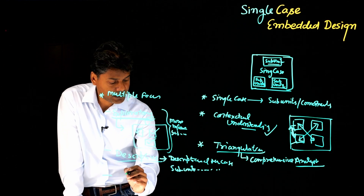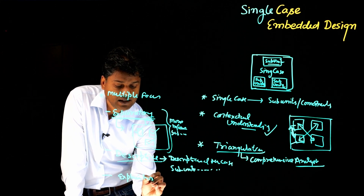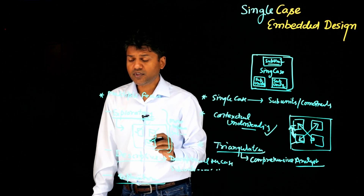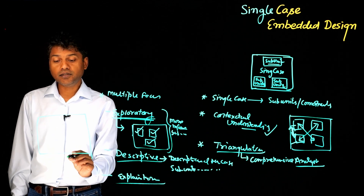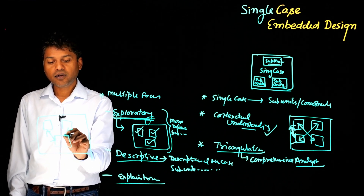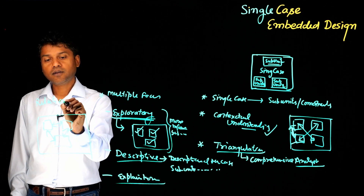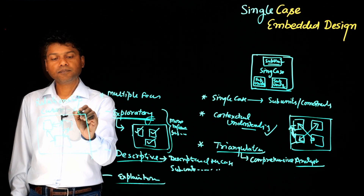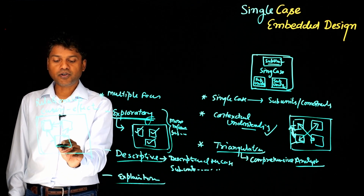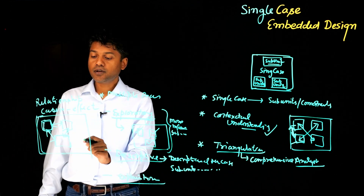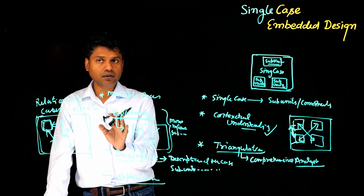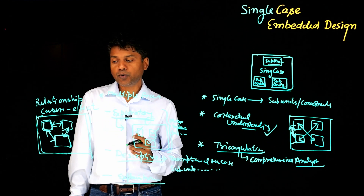And finally, you can make it more explanatory in nature. Explanatory focus means you are trying to understand — if this is a single case — how these various subunits relate to each other, what is the relationship between them, including cause-and-effect connections. So, you are trying to understand the causality within this single case in the context of these different subunits and components, and how they are affecting the overall phenomenon — the overall experience of this single case, which might be anything: an individual, a program, or an event.